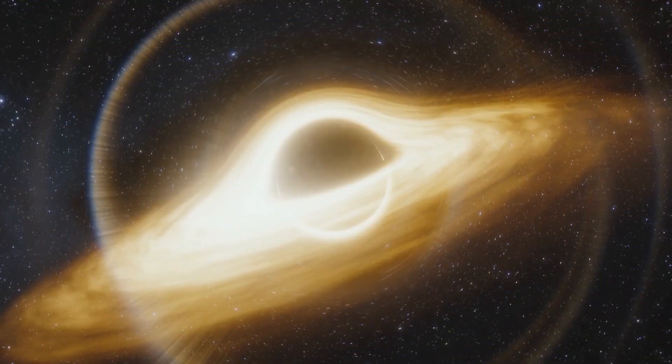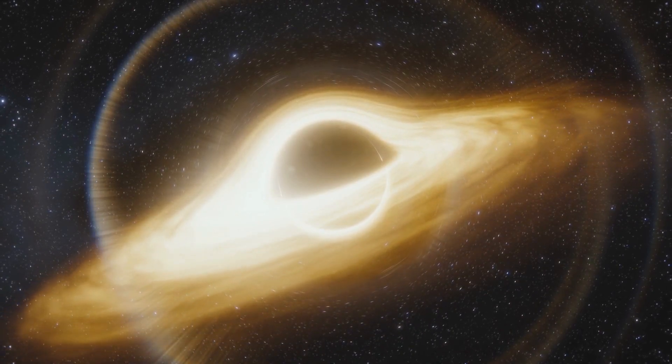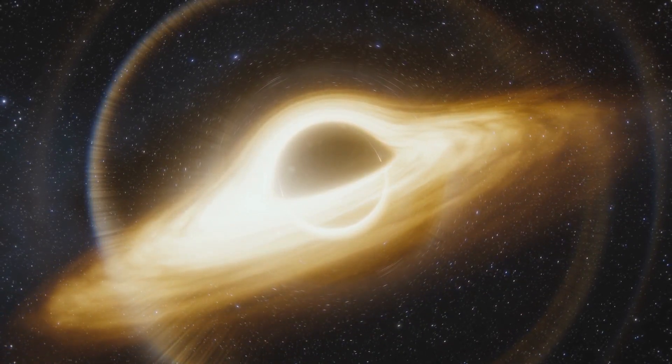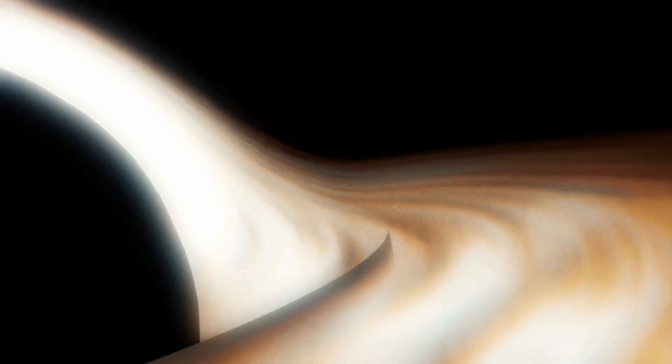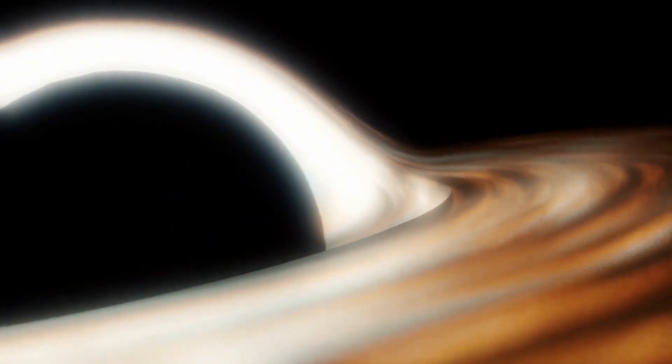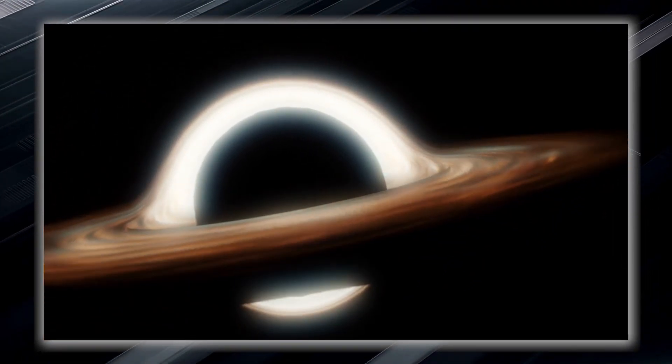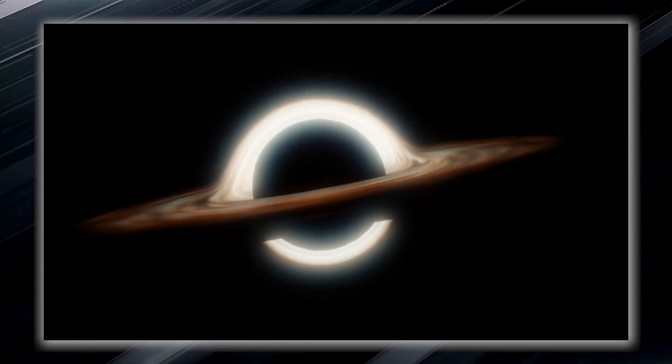This is where things become truly extraordinary. The gravitational pull near a black hole is so incredibly strong that it creates what is known as an event horizon. The event horizon is not a physical barrier, but rather a region where space gradually bends. It is an invisible boundary or point of no return.